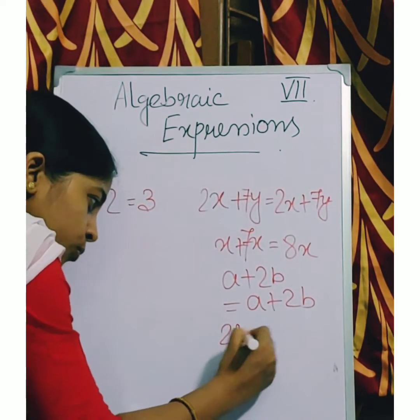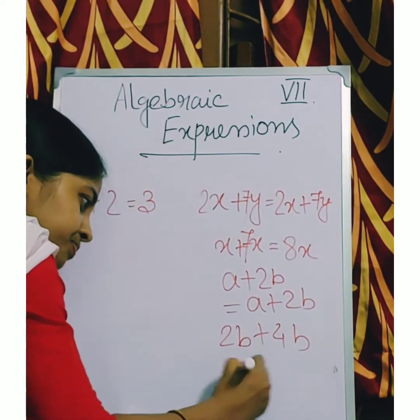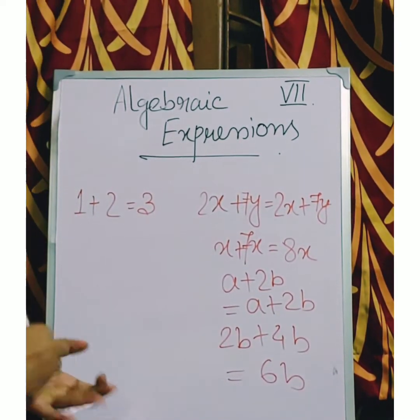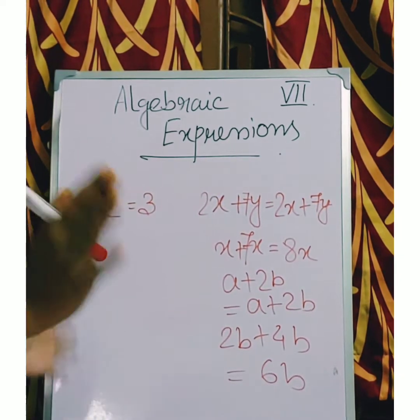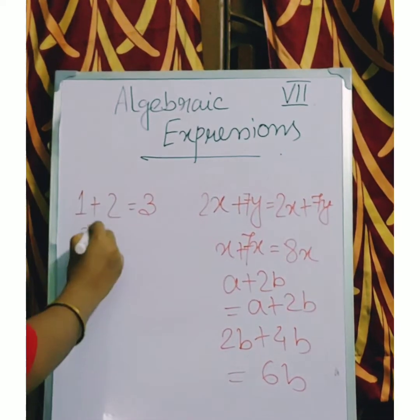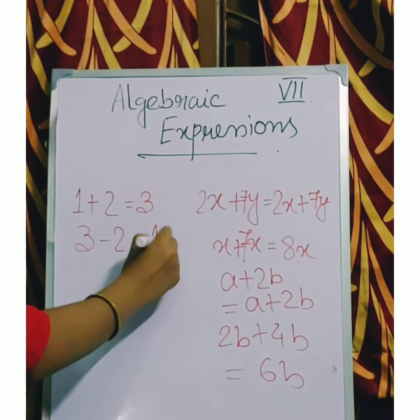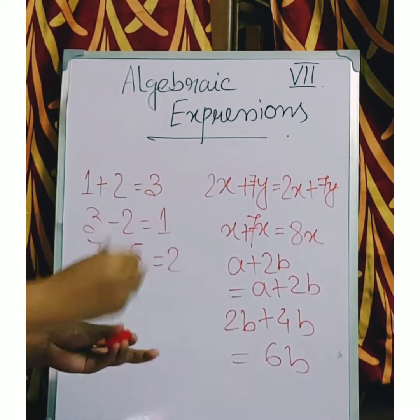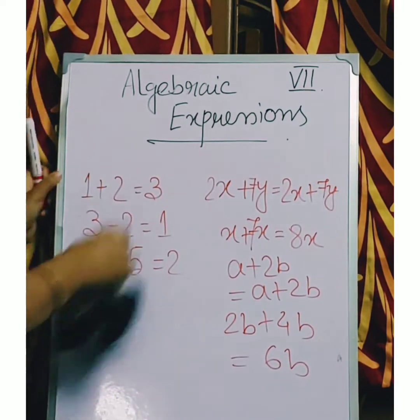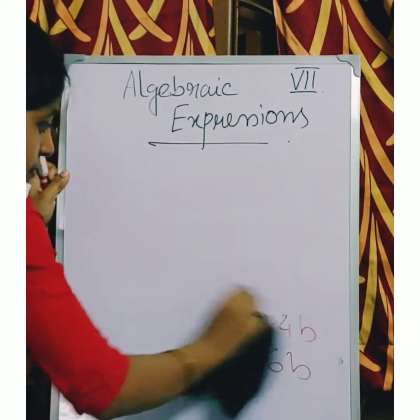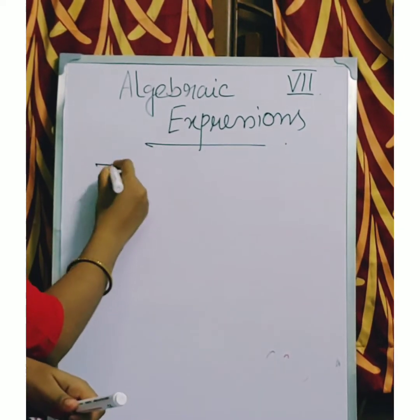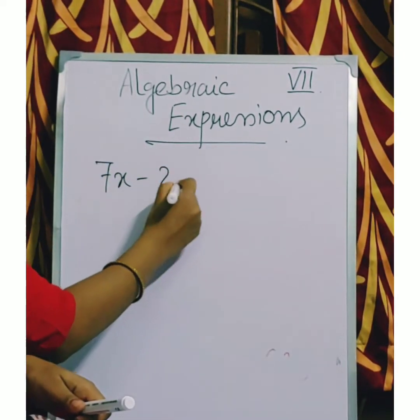But 2b plus 4b, answer is 6b. Same thing is applicable for subtraction. 3x minus 2b. 7 minus 5b equals 2b. But 7x minus 2x.